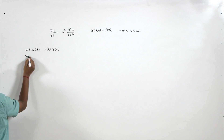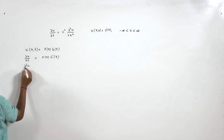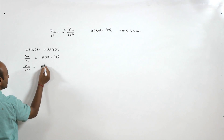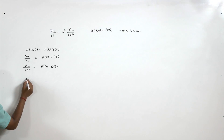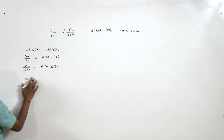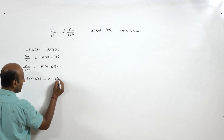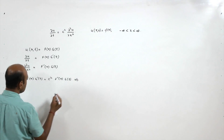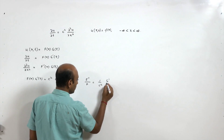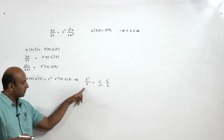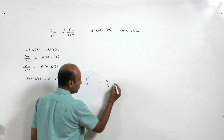We take u as a function of x and t, written as f(x) times g(t). Then del u by del t equals f(x) g'(t), and del squared u by del x squared equals f''(x) g(t). Substituting into the heat equation gives f(x) g'(t) = c² f''(x) g(t), which implies f''/f = (1/c²) g'/g. Since the left side is a function of x only and the right side a function of t only, both must equal a constant k.